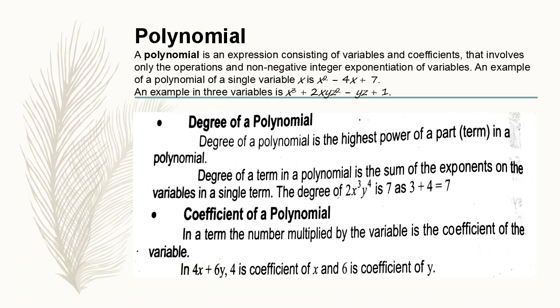The degree of 2x cube y4 is 7 as 3 plus 4 equals 7. We sum up the power of both x and y variables which is 7. So the degree of polynomial here is 7.